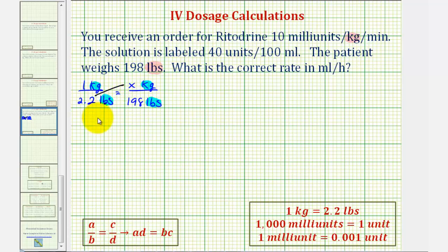But because we do, 2.2 times x is 2.2x, must equal 1 times 198. Dividing both sides by 2.2, this comes out very nice here on the right. This is equal to 90. So 90 kilograms is equal to 198 pounds.